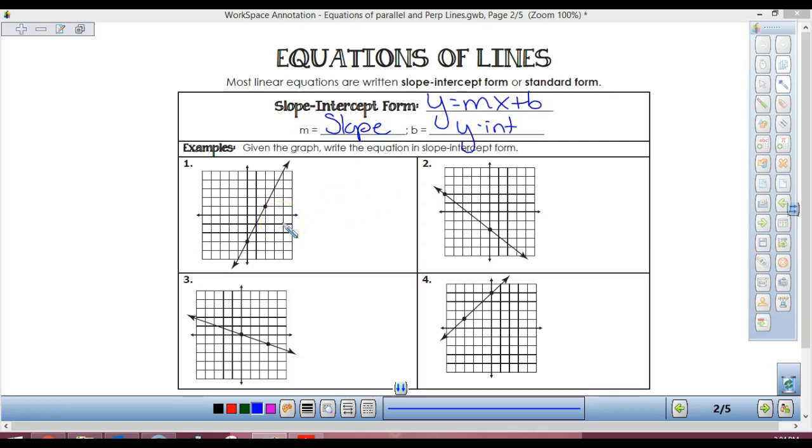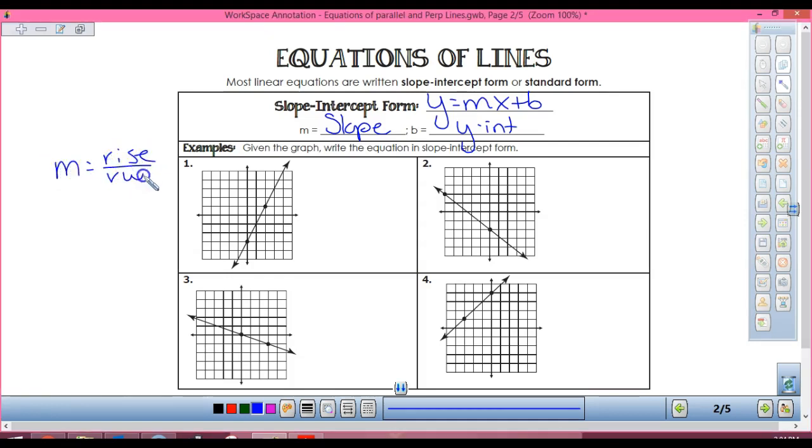So from a graph, how do I find slope? Rise over run. M equals rise over run. What is my y-intercept? How do I know what that is?